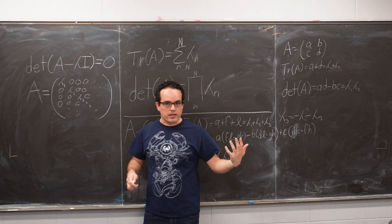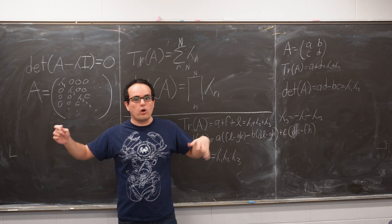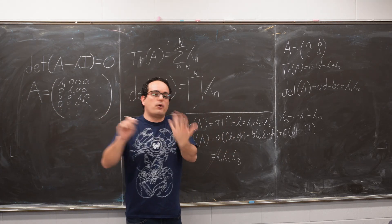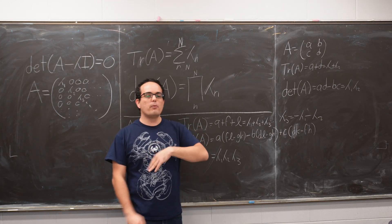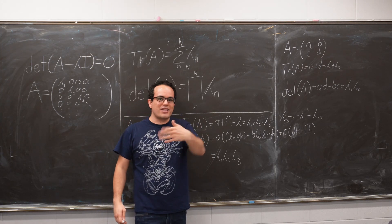And if your matrix is 4 by 4 or, god forbid, 5 by 5 or larger, at that point, just put it in Wolfram Alpha. Like, we humans weren't made to do such kinds of calculations.